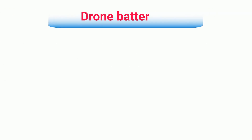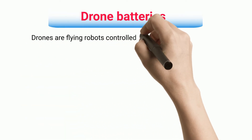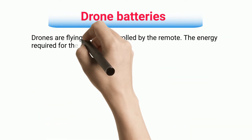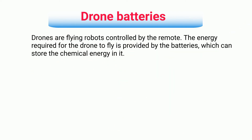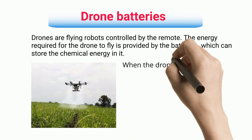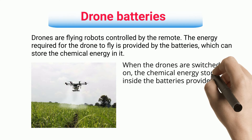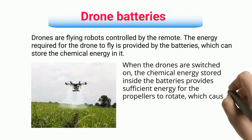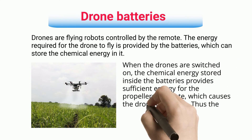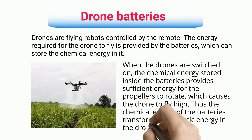Drone Batteries. Drones are flying robots controlled by remote. The energy required for the drone to fly is provided by batteries, which can store chemical energy. When the drones are switched on, the chemical energy stored inside the batteries provides sufficient energy for the propellers to rotate, which causes the drone to fly high. Thus the chemical energy of the batteries is transformed as kinetic energy in the drones.